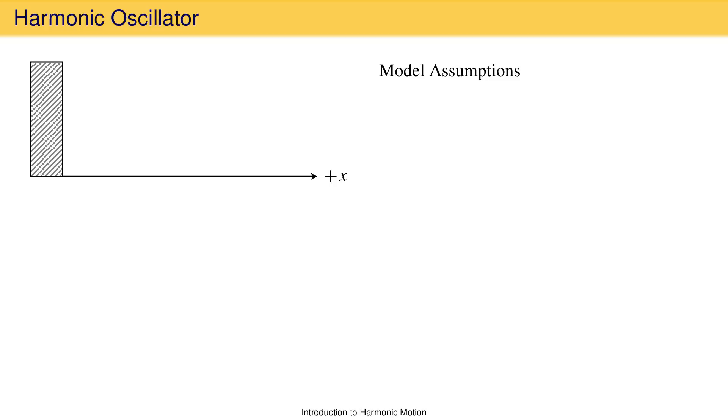Imagine we have a vertical wall and a floor we call the x-axis. We're going to treat the wall on the left side of the diagram as immovable. This is an approximation because no real wall is immovable, but that's the nature of simplified models.